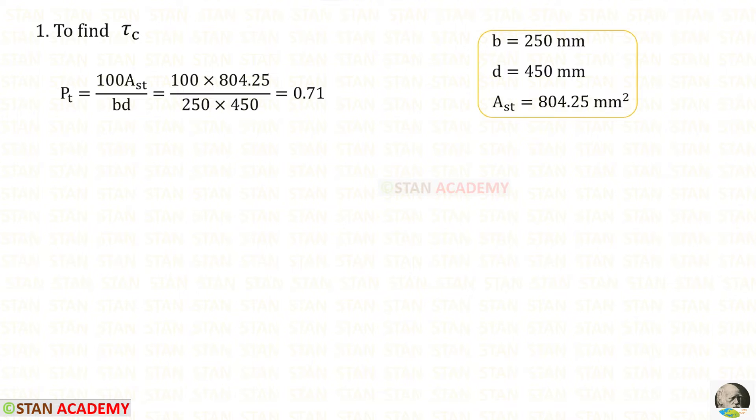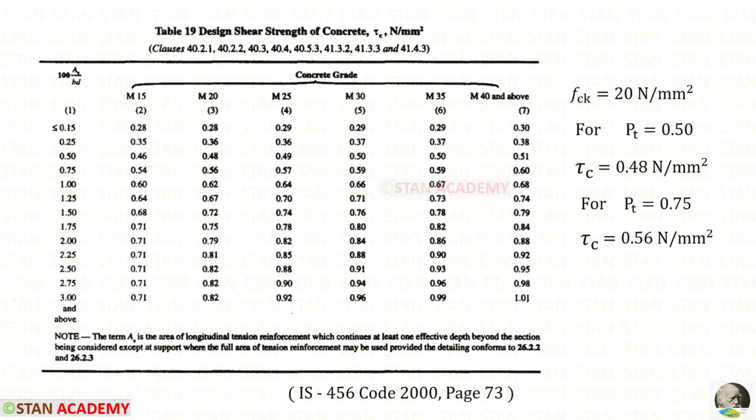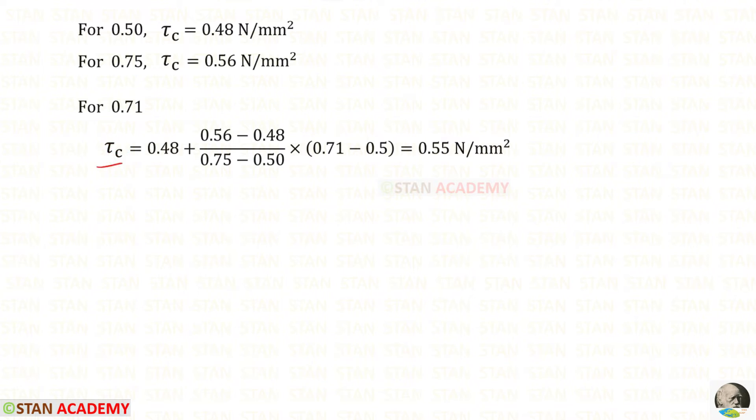In this problem, first, we have to find the design strength of concrete, that is τc. We have to find the percentage of steel in tension. Using this formula, we can find that. For that, we will get 0.71. Now, we have to open IS-456 codebook, page number 73. Our Pt is 0.71, it comes between 0.5 and 0.75. Our FCK is 20. So, we have to copy these two values. To find τc, for 0.71, we can use interpolation. We will get 0.55.